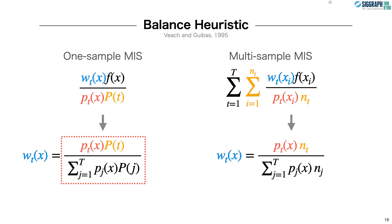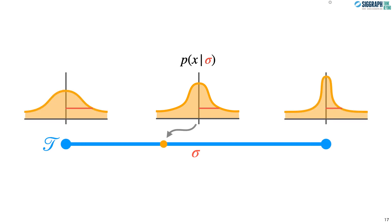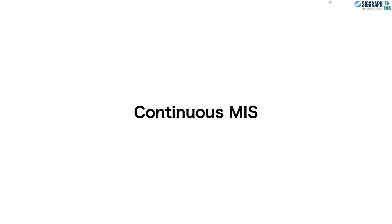However, there are some integration problems that have not just multiple sampling techniques, but a continuum of sampling techniques available. For example, let's say we have a Gaussian distribution. We can parameterize its standard deviation sigma over a range, and each value within the range corresponds to a different Gaussian, resulting in a continuum of possible sampling techniques. So to handle continuums of techniques, we introduce continuous multiple importance sampling, which is a generalization of multiple importance sampling to continuums of sampling techniques.